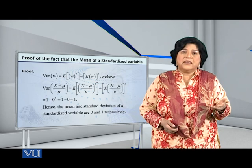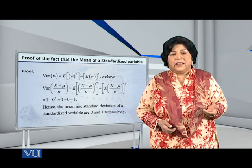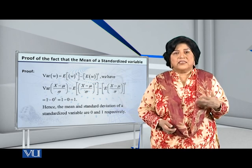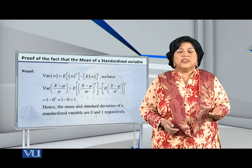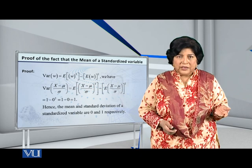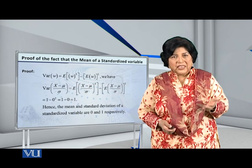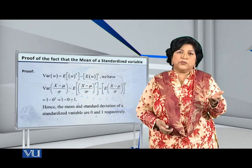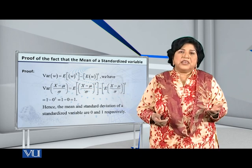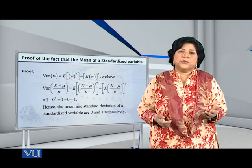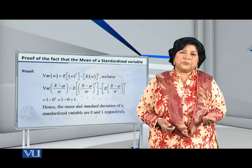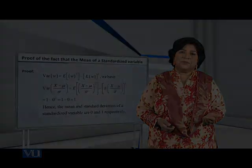This is a simple proof of the fact that the variance of a standardized variable is always 1. If the variance is 1, it is clear that the standard deviation is also equal to 1. And the mean, as we have already shown, is equal to 0.